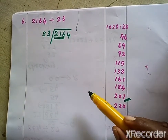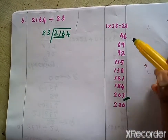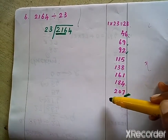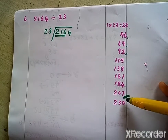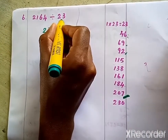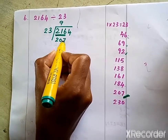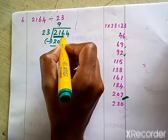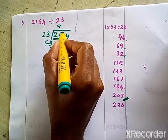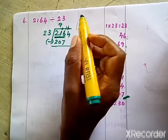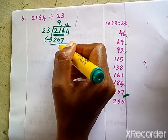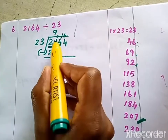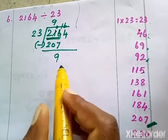207 is less than 216. At what times do we get 207? 9 into 23 equals 207, so we write 9 as the quotient and 207 below. Next we subtract, but we can't subtract directly so we regroup — it becomes 16. 16 minus 7 is 9, and 0 minus 0 is 0. So we have 9 remaining.